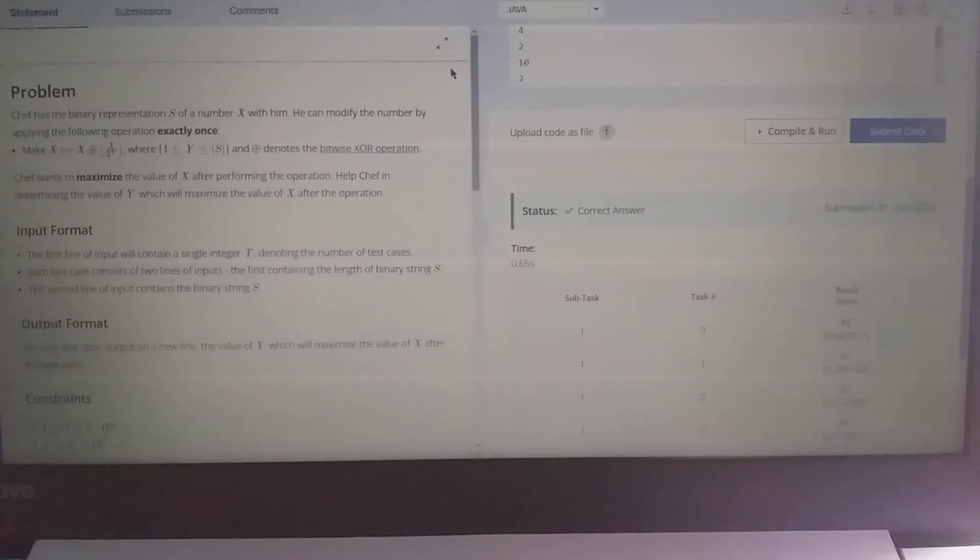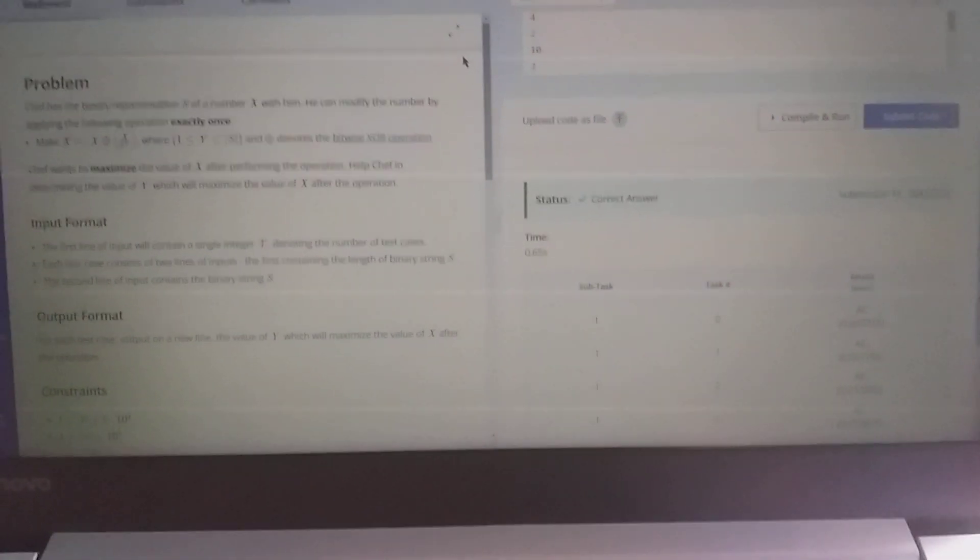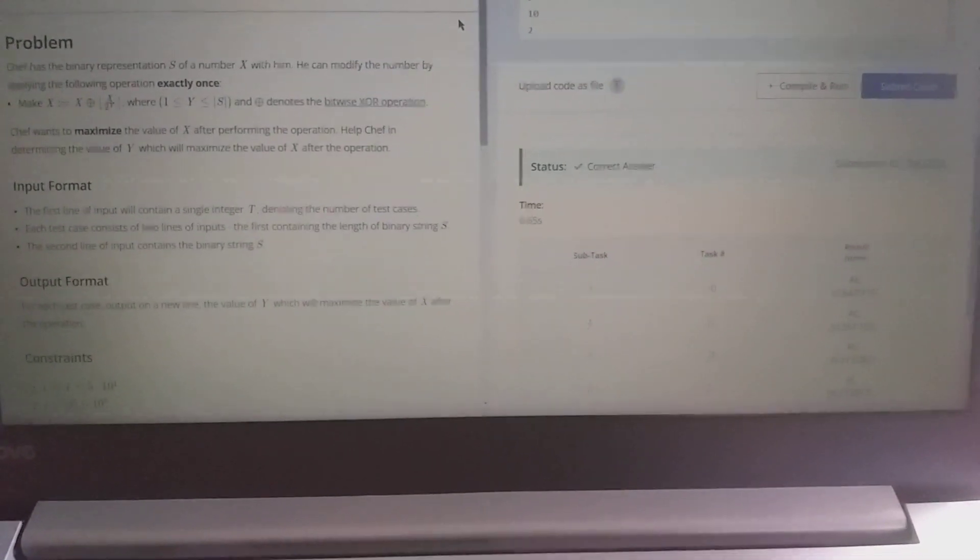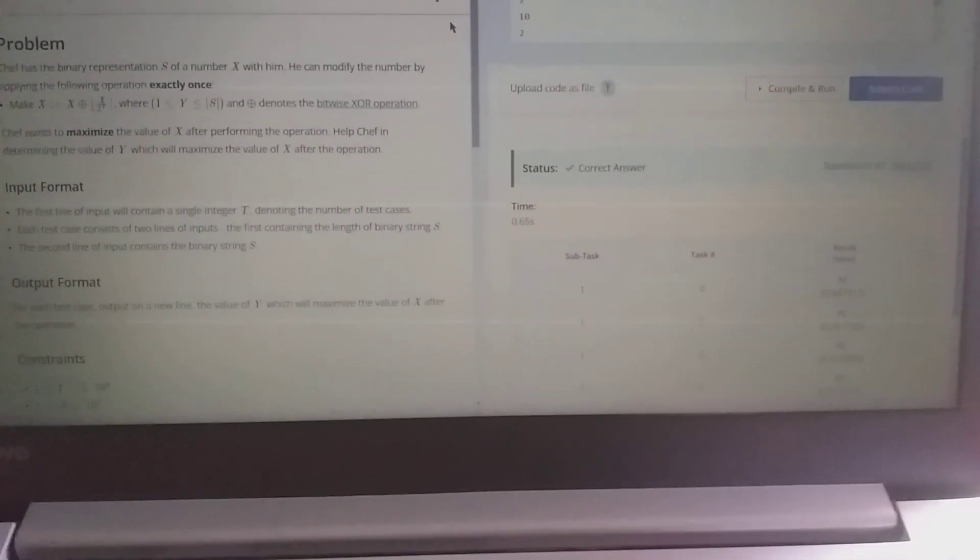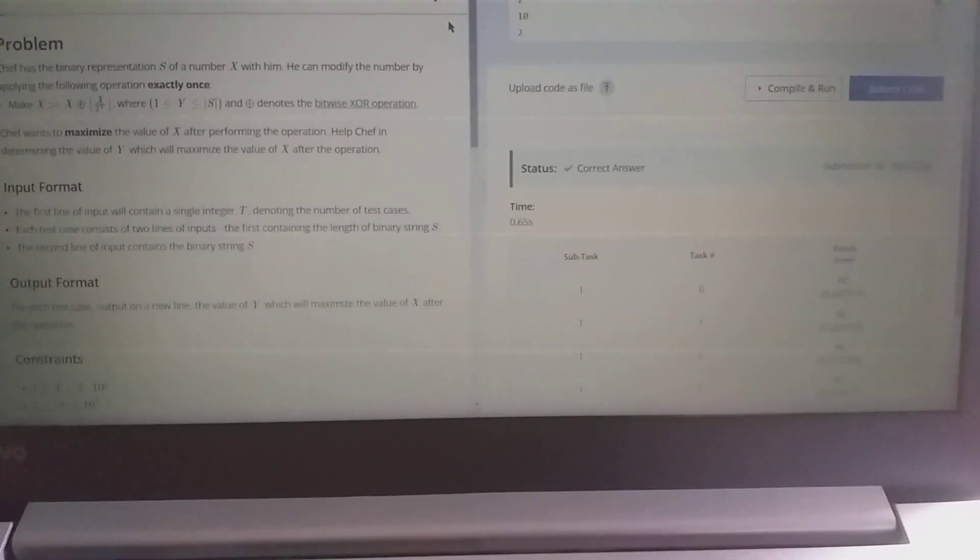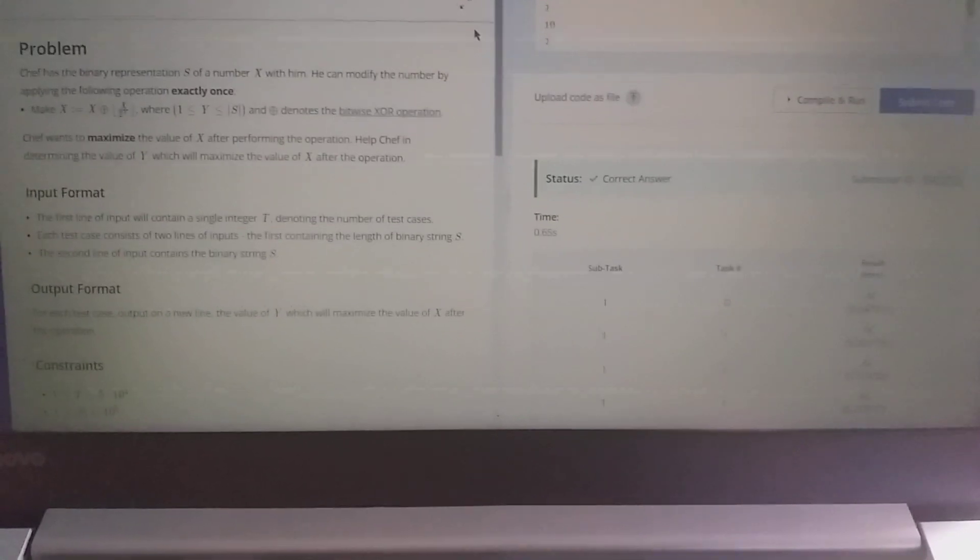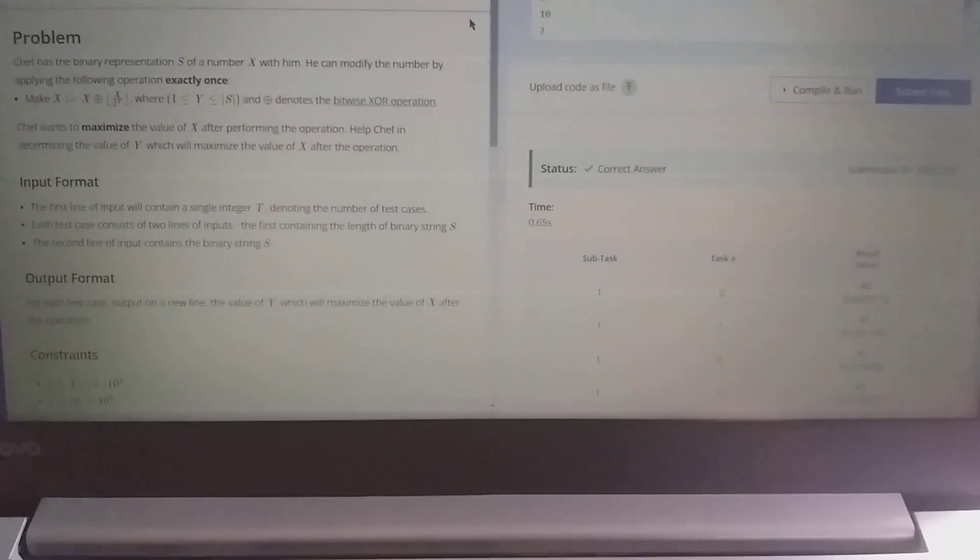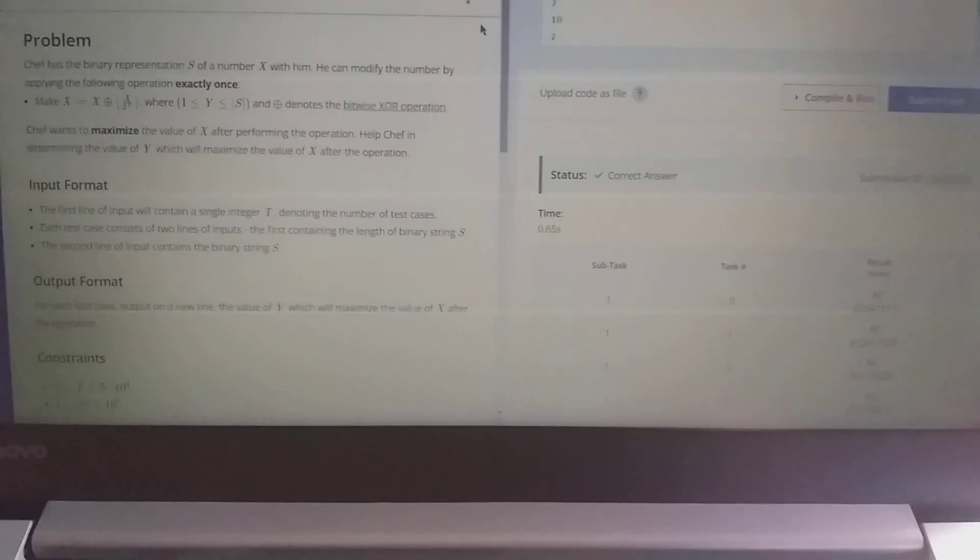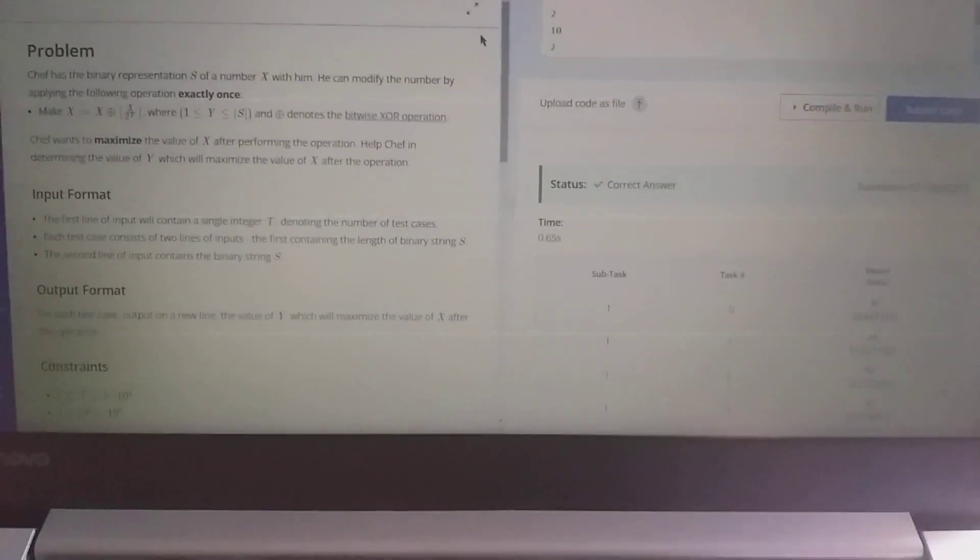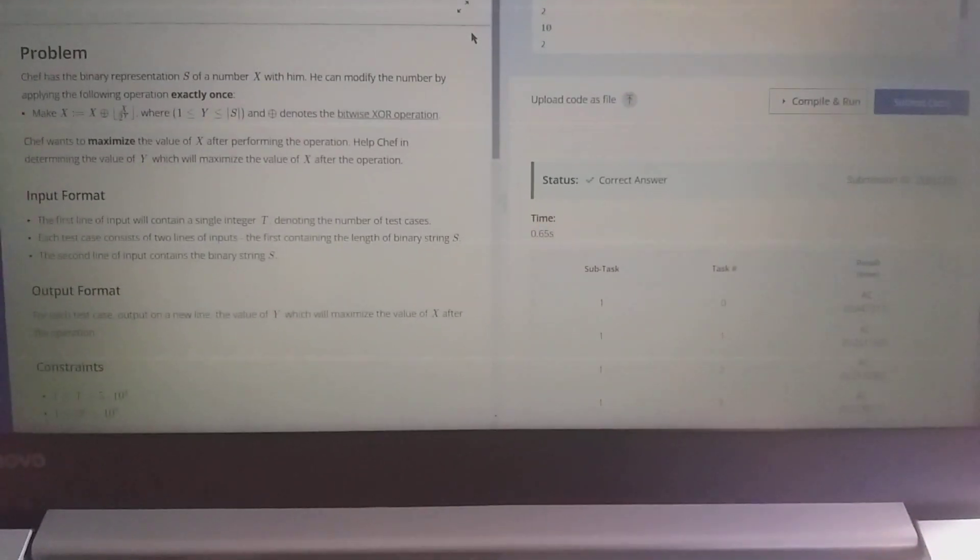The question goes like Chef has the binary representation S of a number X with him. He can modify the number by applying the following operation exactly once: make X equal to X XOR X divided by 2 to the power Y. XOR denotes bitwise XOR and Y should be in the range between 1 to the length of the string S. Our aim is to maximize the value of X after performing the operation thus we have to determine the value of Y.